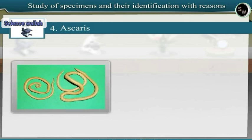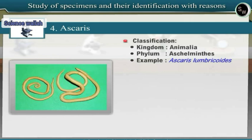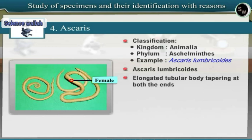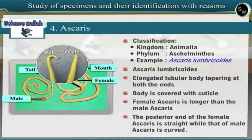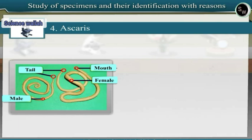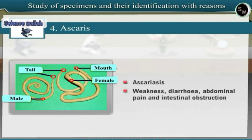Specimen 4: Ascaris. Ascaris belongs to the phylum Aschelminthes of Kingdom Animalia. Ascaris is a roundworm showing endoparasitic mode and is included under phylum Aschelminthes. Ascaris lumbricoides is a common endoparasite living in the intestine of man. It has an elongated tubular body tapering at both ends, covered with cuticle. Female Ascaris is longer than male. The posterior end of female is straight while that of male is curved. Ascaris causes Ascariasis, characterized by weakness, diarrhea, abdominal pain and intestinal obstruction.